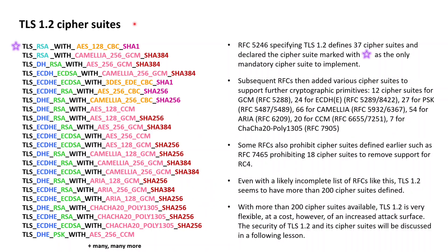TLS 1.2 is famous for its very large set of cipher suites offered. What you can see here on the left side of this slide is just a small extract of the cipher suites offered by TLS 1.2, with TLS 1.2 offering in total probably more than 200 cipher suites.